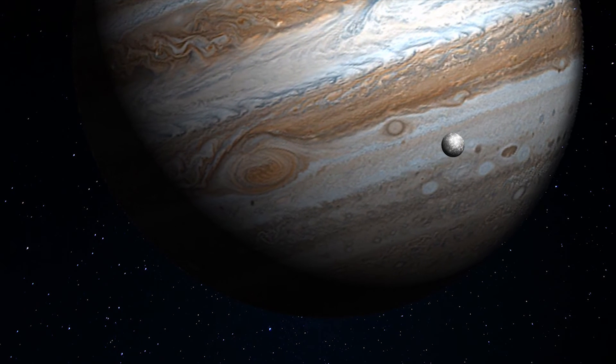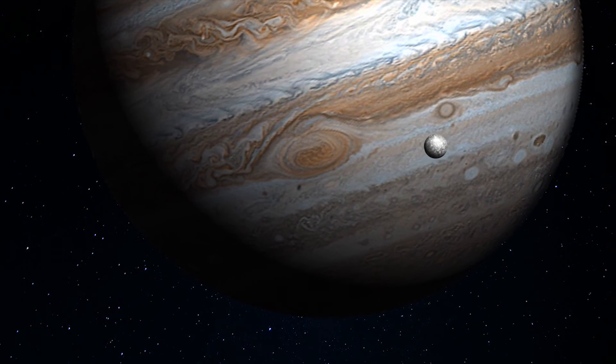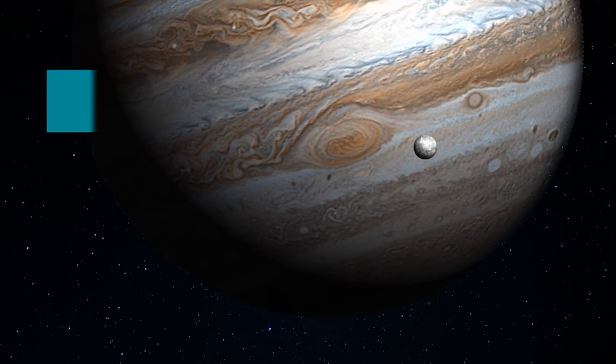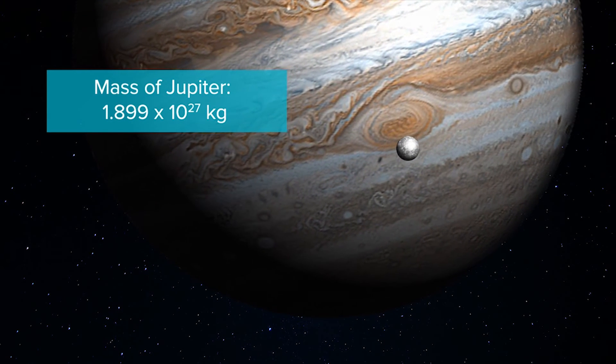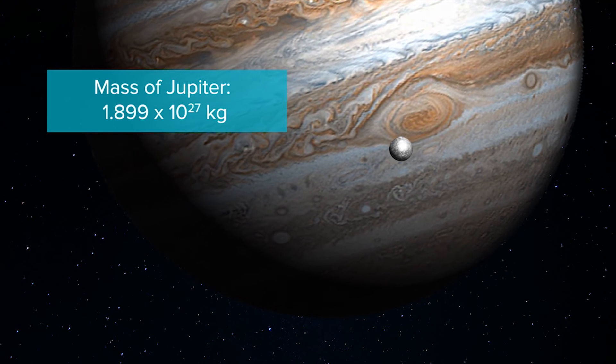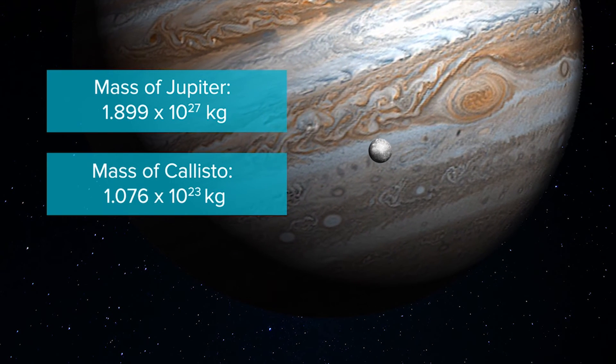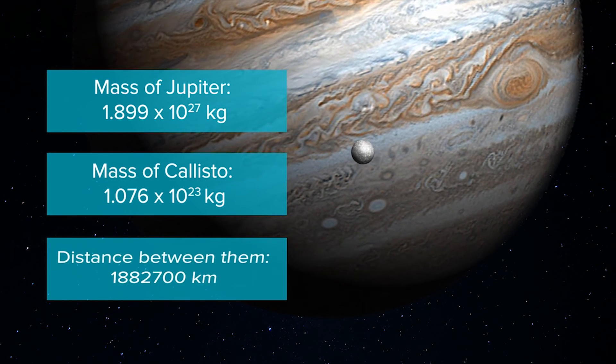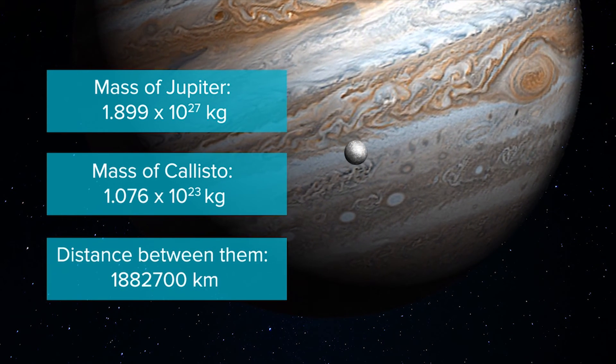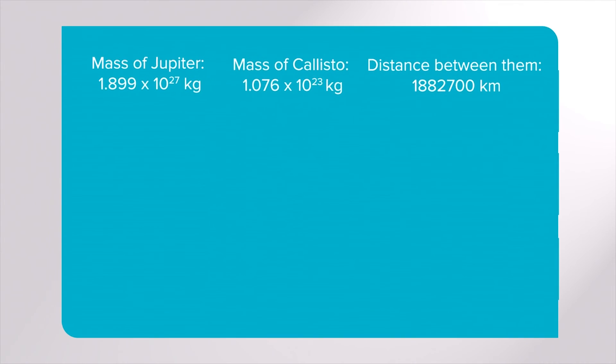As an example, let's calculate the gravitational potential energy between Jupiter and its moon Callisto, its outermost large moon. Jupiter has a mass of 1.899 times 10 to the power of 27 kilograms. Callisto's mass is 1.076 times 10 to the power of 23 kilograms, and the distance between them is 1,882,700 kilometres on average.